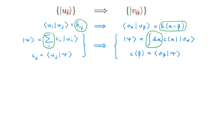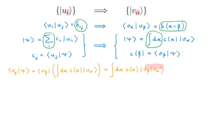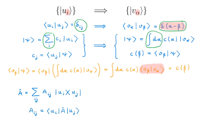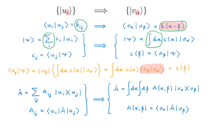I will re-derive the expression for the expansion coefficients to convince you that we only ever use the Dirac delta function under an integral sign. Starting with the bracket ⟨v_β|ψ⟩, I insert the expansion of |ψ⟩ in the v_α basis, rearrange the expression, replace the bracket between basis states with the corresponding delta function — and as promised the delta function only appears under the integral sign — and finally evaluate the integral to obtain the expansion coefficient c(β). The representation of an operator also generalizes to an expression in terms of integrals, where the expansion coefficients are now functions of two variables α and β. Again, all we're doing is replacing sums with integrals.